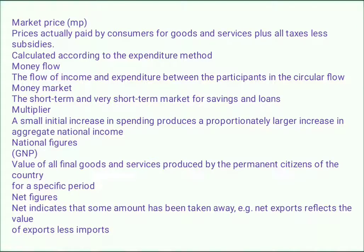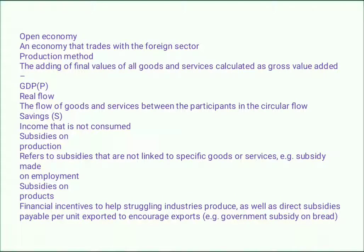Market price includes all taxes and subsidies, calculated according to the expenditure method. Money flow: the flow of income and expenditure between participants in the circular flow. Money market: the short-term market for savings and loans. Multiplier: a small initial increase in spending produces a proportionally larger increase in aggregate national income. National figures (GNP): the value of all final goods and services produced by the permanent citizens of the country for a specific period. Net figures: indicates that some amount has been deducted — e.g. net exports reflects the value of exports less imports.